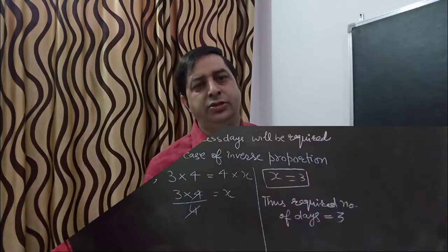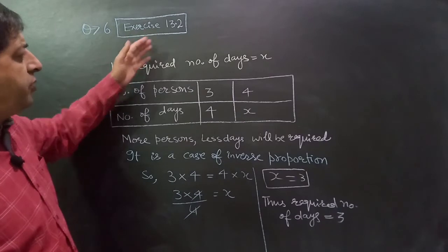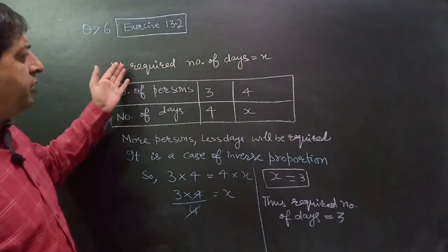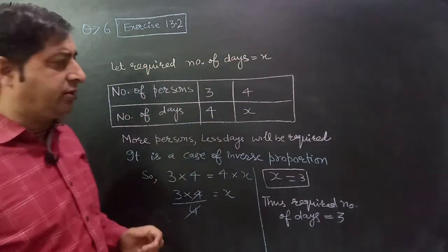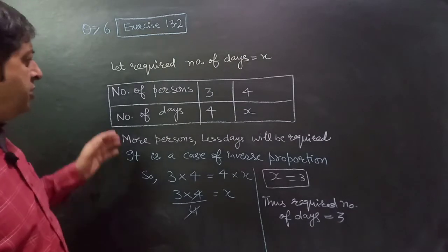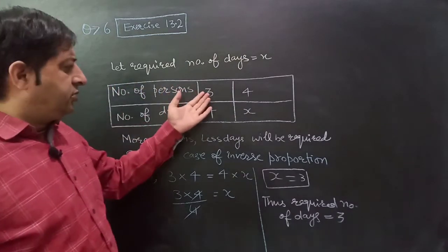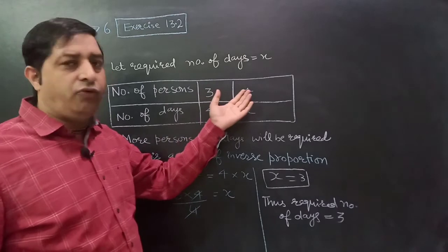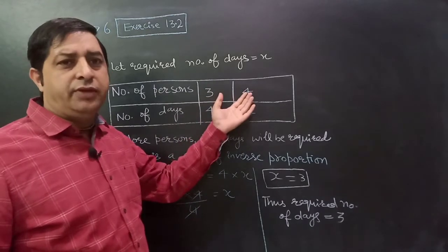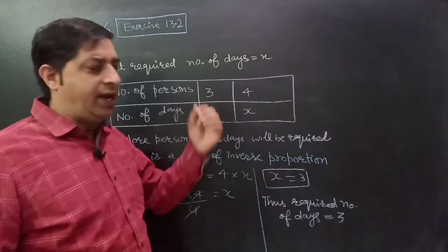Let's come to this question. Exercise 13.2. Here we assume that the required number of days is equals to x. If there are three persons, they will take four days. And if there are four persons, we assume that they will take x days.